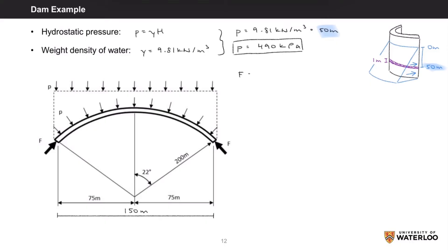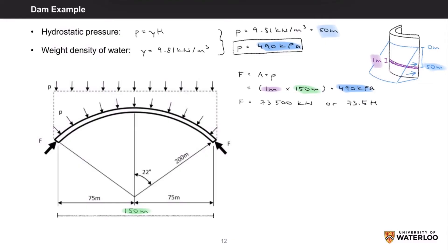Recall that force is equal to area times pressure. So for a 1 meter high strip of the dam, we get 1 meter times the full span of the dam — which is 150 meters — times the pressure we just found of 490 kilopascals. This gives us a total force of 73,500 kilonewtons, or 73.5 meganewtons.